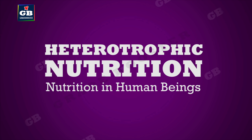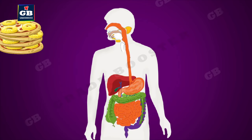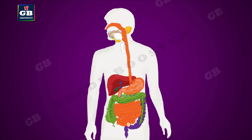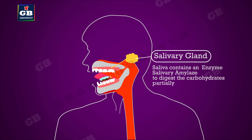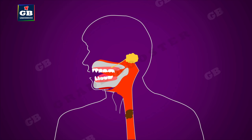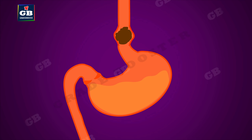Now let us see nutrition in human beings — heterotrophic nutrition. Food enters our body through the mouth and travels through a long canal which ends at the anus, called the alimentary canal. In the mouth, food is ground to a paste by teeth and saliva. Saliva is a watery fluid that makes food soft and wet; it also has an enzyme called salivary amylase which partially digests sugars. The food then reaches the stomach through a pipe called the esophagus, whose muscles contract rhythmically to move the food.